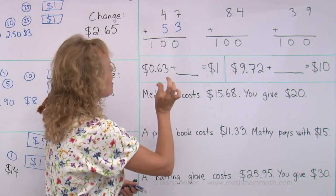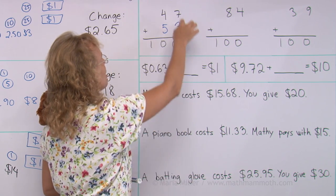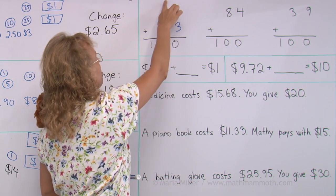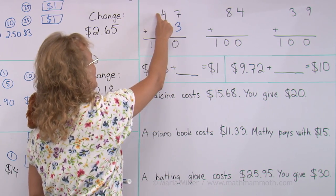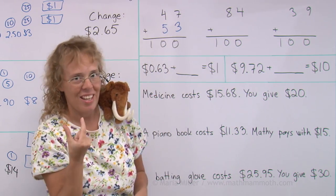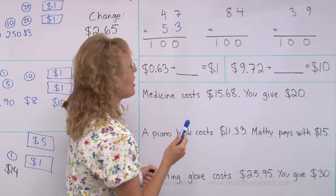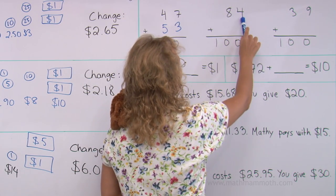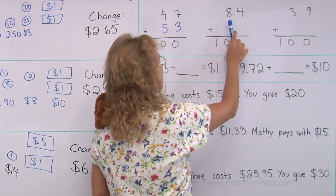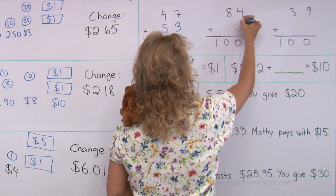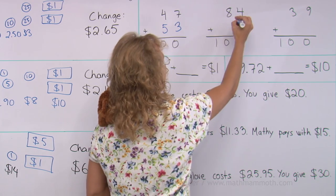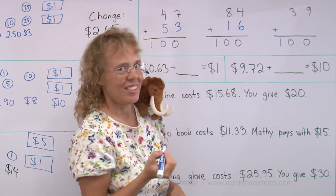And the reason it works is because 7 plus 3 makes 10. You would have a carry here, or regrouping. There would be 1 here. And then 1 plus 4 plus 5 makes the 10. But as far as these two numbers, they together only make 9. So let's look at it here again. 4 and how many makes 10? And then 8 and how many makes 9? 4 and 6 makes 10, and 8 and 1 makes 9.